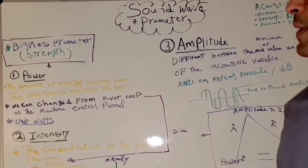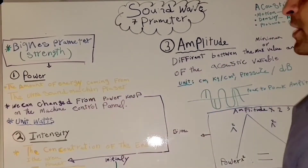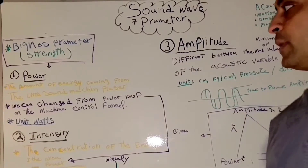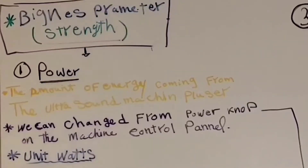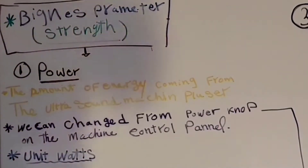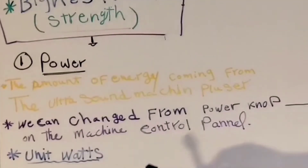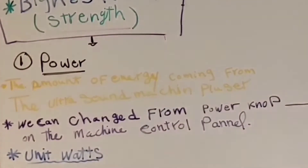First, we'll start with the power. The power is the amount of energy coming from the ultrasound machine or the ultrasound pulsar. We can change the power from the knob on the machine control panel. As a sonographer, we can control it to change the power. The unit for power is watts, or any unit we use to measure energy.